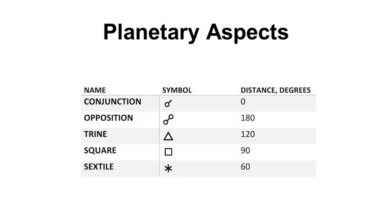The major planetary aspects are the conjunction, the opposition, the trine, the square, and the sextile.